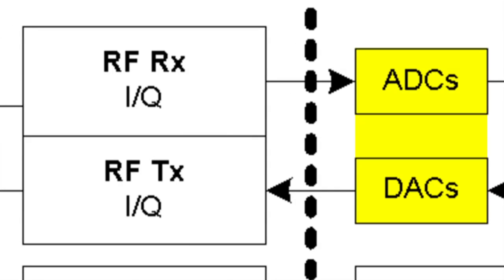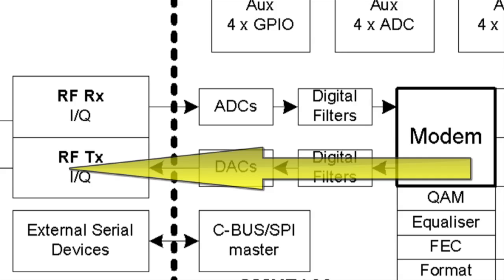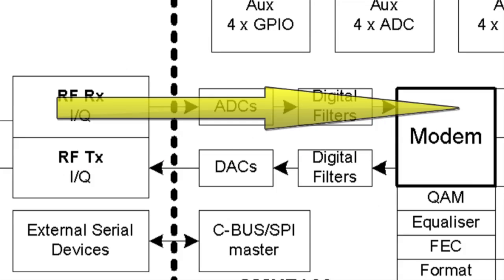The radio interface codec allows direct connection to transmitter and receiver. The transmit path provides offset and gain controls to trim the external IQ modulator. The receive path includes a wide dynamic range ADC, automatic gain control function, and automatic corrections for carrier frequency error, received signal DC offset error, and phase and amplitude error.